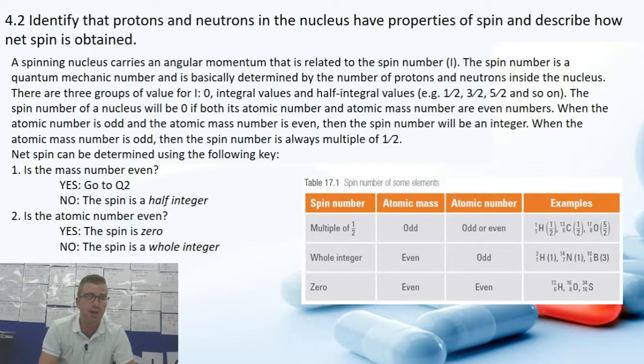Is the mass number even? If yes, you go to question two. If no, then the spin number is a half integer.